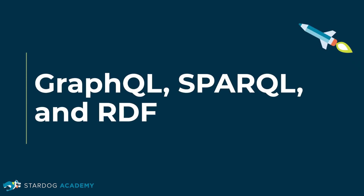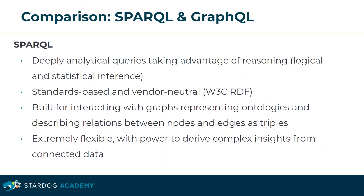This section is about GraphQL, SPARQL, and RDF. GraphQL is a declarative framework developed by Facebook to provide a graph abstraction over one or more data endpoints. SPARQL has deeply analytical queries taking advantage of reasoning using logical and statistical inference. It is standards-based and vendor-neutral. It's built for interacting with graphs, representing ontologies, and describing relations between nodes and edges as triples. It's extremely flexible, with power to derive complex insights from connected data.